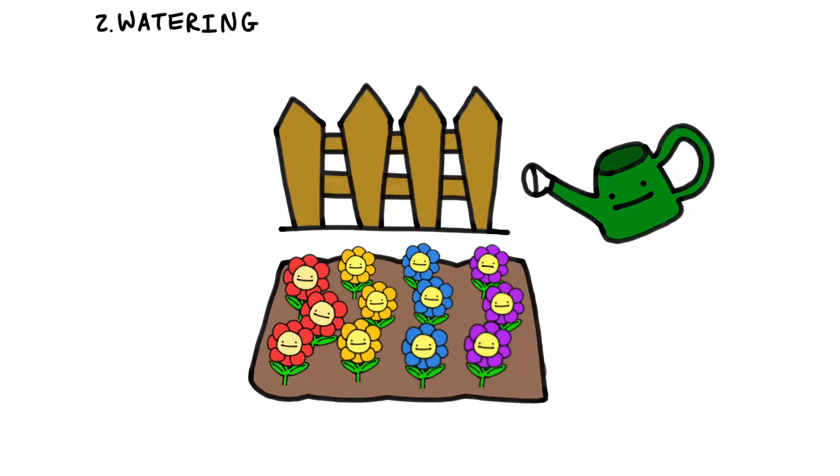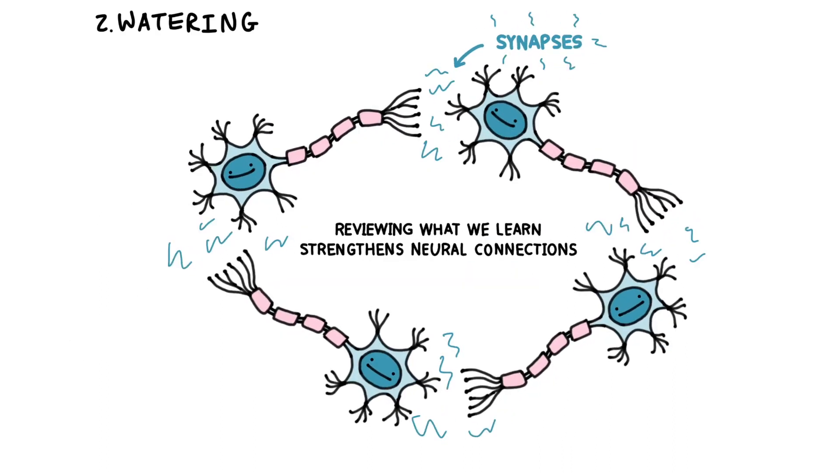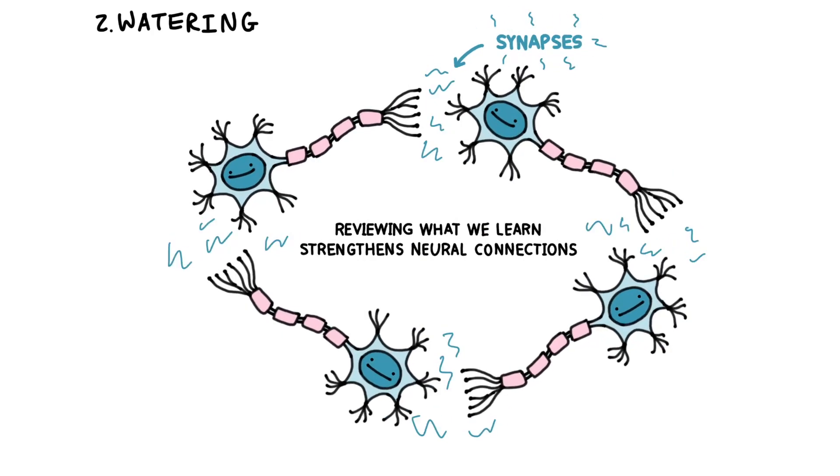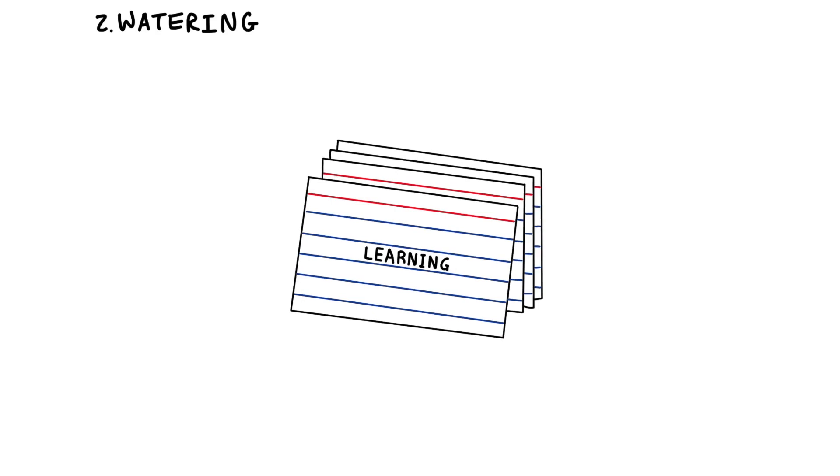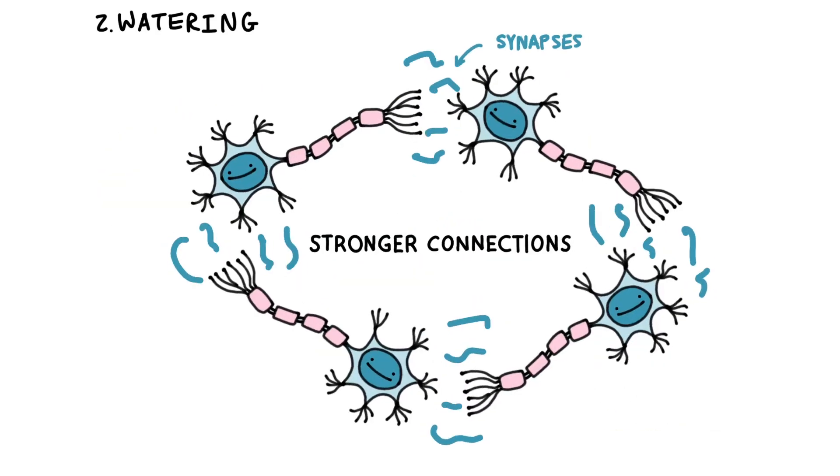Step 2 is watering the plants. Once the seeds are planted, they need water and nutrients to grow. In our brain garden, this involves repetition and practice. Reviewing and reinforcing what we've learned strengthens the neural connections, making them more efficient. This is why using flashcards for learning vocabulary or hitting the ball over and over again in tennis helps you learn the words and skills more effectively.